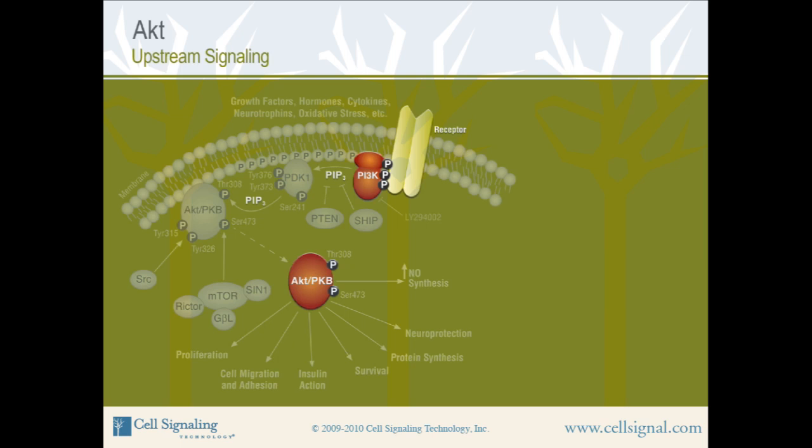PIP3 binds to the PH domains of several proteins, including AKT and PDK1. This PIP3, which is membrane-anchored, binds to the PH domain of AKT and causes the recruitment of AKT to the cell membrane.